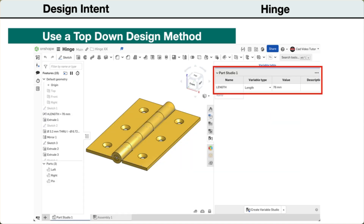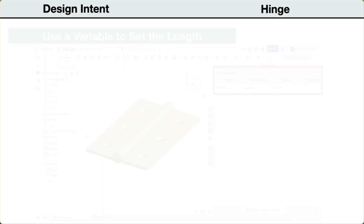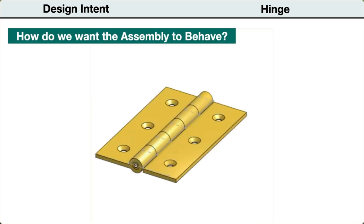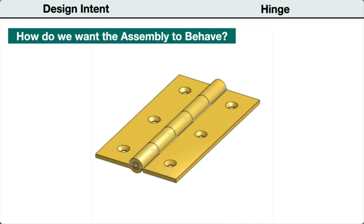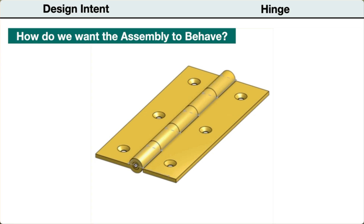Using a top-down modeling method helps establish our design intent by modeling the parts together in the same part studio and sharing the associated parameters between parts. In the Onshape document, the length can be set as a variable. We can then use this parameter to drive changes to all of the parts and enforce our design intent, so it would update to the new length meeting the design intent without errors.